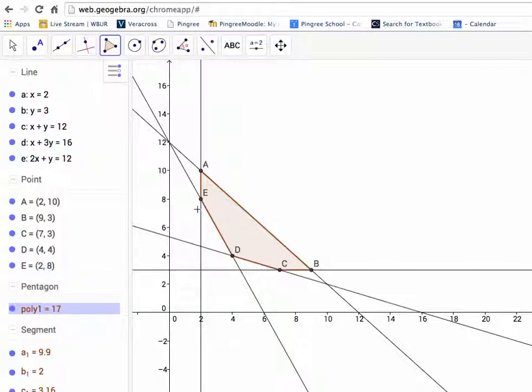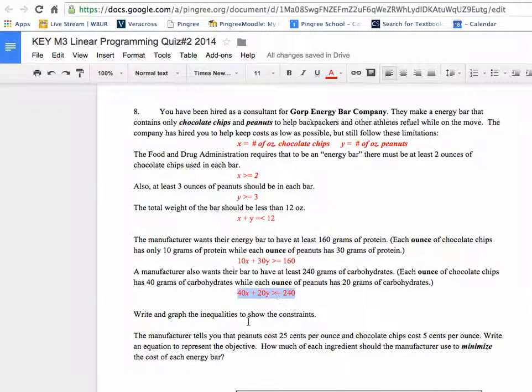Well, the rule with linear programming is that the vertices are the only places where I'm going to get the best or the least of something. In this case, I'm trying to minimize the cost. So to have my cost be at a minimum, it's highly likely that it's point E, point D, or point C that will go into my objective function. What the heck is an objective function, you might say? Here it is. It's based on the fact that the manufacturer tells us that peanuts cost 25 cents per ounce and chocolate chips cost 5 cents per ounce. So an equation that represents this objective is as follows.